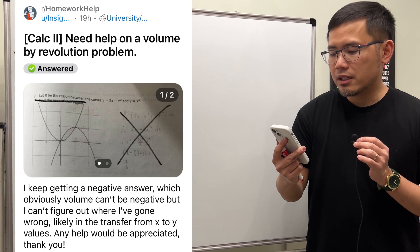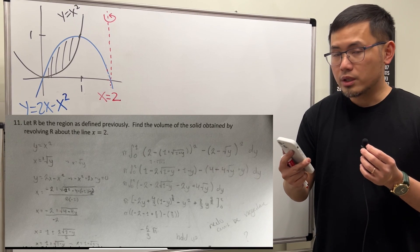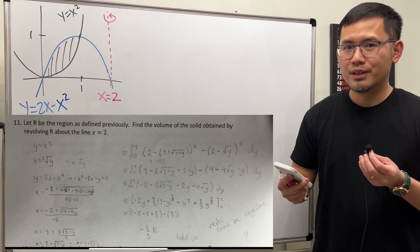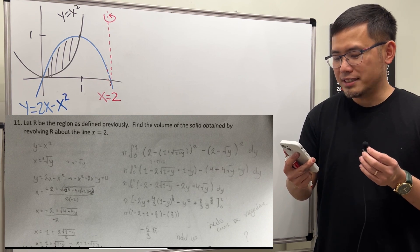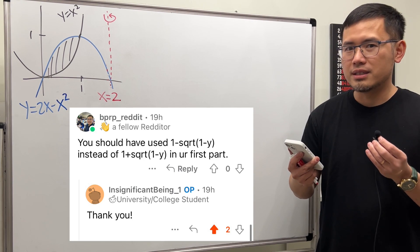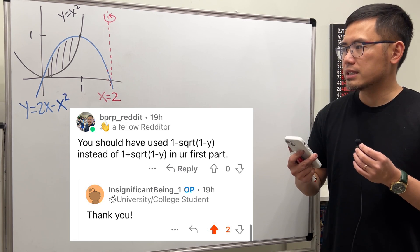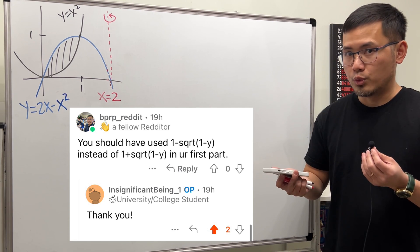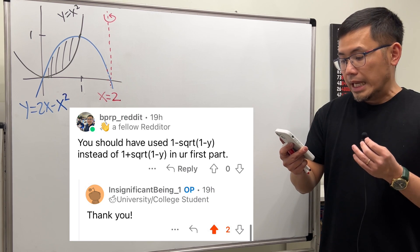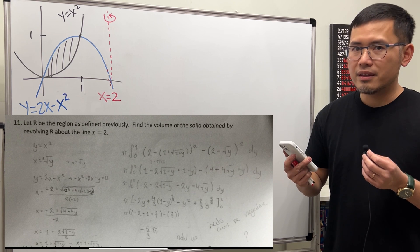This is a Calculus 2 volume by revolution problem. You attached your work asking why your answer is negative — of course volume cannot be negative. I replied that you are supposed to use the negative version instead of the plus version when solving y = 2x - x² for x using the quadratic formula. I also see that you used the washer method for this question.